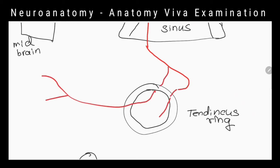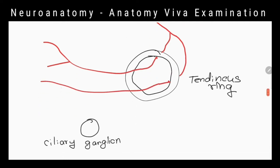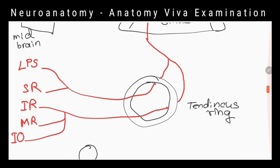Levator palpebrae superioris and superior rectus muscles are supplied by superior division of the oculomotor nerve. Inferior rectus, medial rectus and inferior oblique muscles are supplied by inferior division of oculomotor nerve.